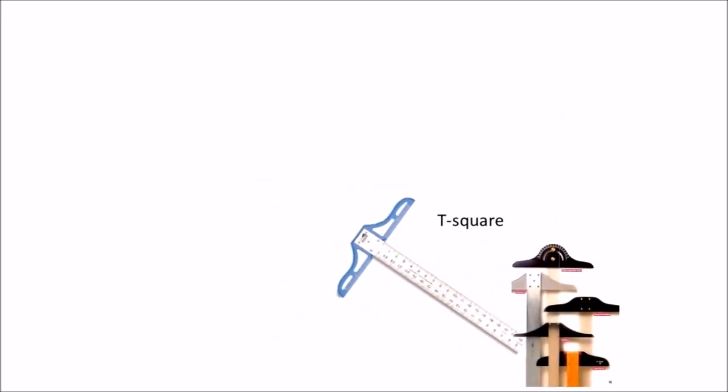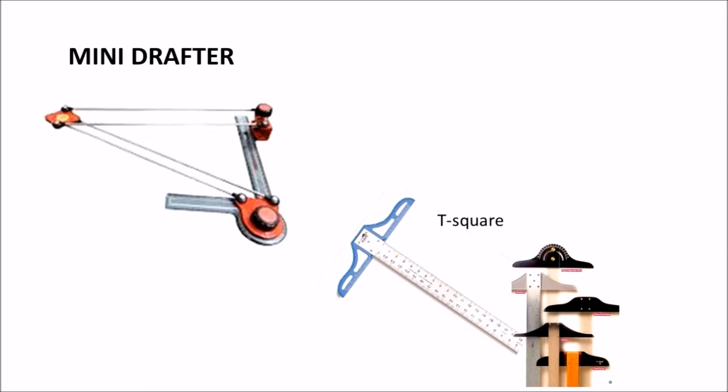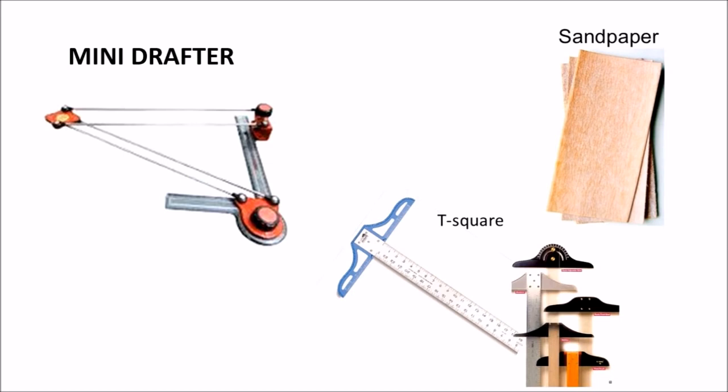T square is an instrument which is used to make perpendicular and parallel lines with an accurate measurement. The mini drafter is most frequently used by engineers to draw parallel and perpendicular lines or any of the inclined lines by fixing the mini drafter on the board. Sandpaper is used to rub down the nibs of the pencils and make them sharper to have proper width of the line.